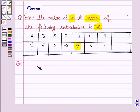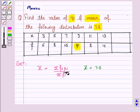The mean of the distribution is given by summation FI XI upon summation FI. We are given that the mean is 7.5. To use this formula and find the value of P, we need to find summation FI XI and summation FI.